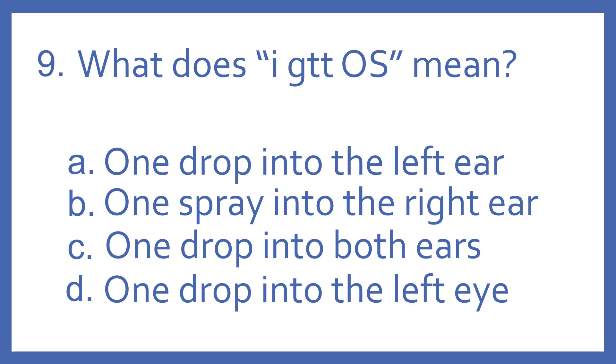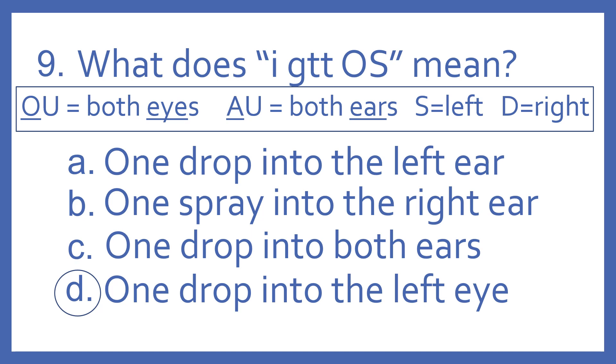Number nine, what does IGTTOS mean? A, one drop into the left ear. B, one spray into the right ear. C, one drop into both ears. Or D, one drop into the left eye. And the answer is D. IGTTOS means one drop into the left eye. And just to review here, OU would mean both eyes. So if it starts with an O, it's with eyes. AU means both ears. So if it starts with an A, it's for ears. And then if it has an S, it's going to be the left. And a D will be the right. So OS would be the left eye. OD would be the right eye. AS would be the left ear. And AD would be the right ear.